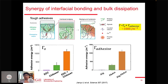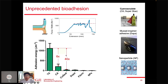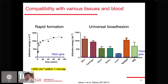Data confirm the synergy between interfacial bonding and bulk toughness dissipation is critical to achieve high adhesion performance — much higher compared to cyanoacrylate and other bioadhesives under development. Adhesion kinetics show we achieve more than 200 J/m² within one minute, already much higher than fibrin glue or other products on the market. Because the carbodiimide chemistry targets proteins, this adhesive can be applied universally across different tissue types, all achieving very high adhesion energy.